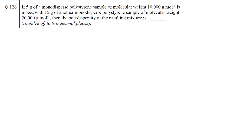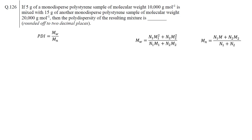In Question 126, we need to find the polydispersity of a polymer containing two types of monodispersed polystyrene samples. As we know, the polydispersity of a polymer is a ratio of weight average molecular weight and number average molecular weight. Formulas to calculate weight average and number average molecular weight are shown here.